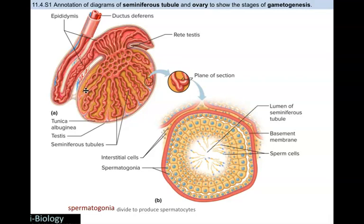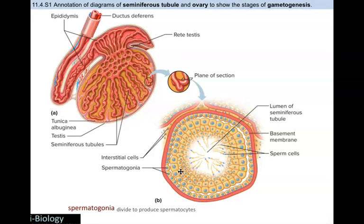Spermatogenesis happens within the seminiferous tubules in the male testes, and oogenesis happens in the ovaries. These tubes within the testes have a cross-section showing a lumen — an empty space — where the sperm end up being released, eventually making their way out of the seminiferous tubules up into the vas deferens. The interstitial cells on the outside of the seminiferous tubule aid in differentiation of the gametes. Spermatogonia undergo mitosis to make exact replicas of themselves, and those cells then go on to produce sperm through meiosis.